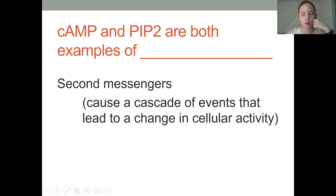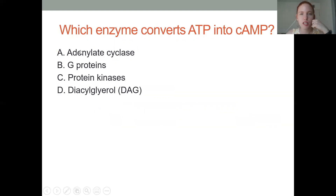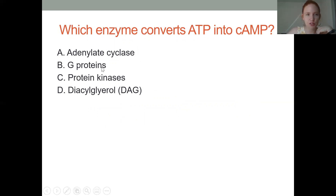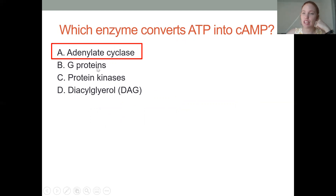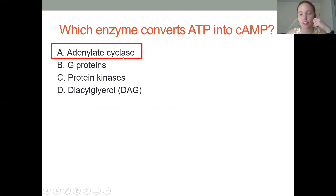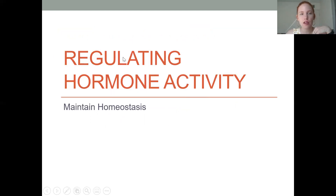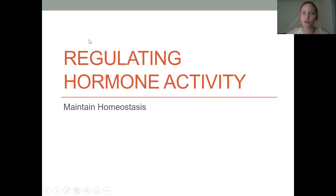The enzyme that converts ATP into cyclic AMP is the adenylate cyclase — it's right in the name. Remember, the G protein is not an enzyme; it only activates the enzyme, which is adenylate cyclase, and that makes cyclic AMP (cAMP). Now we need to go into how we regulate hormone activities.